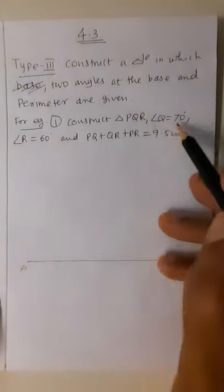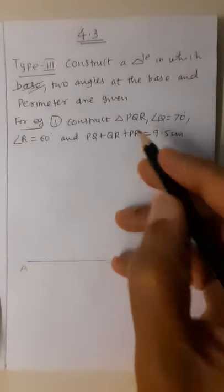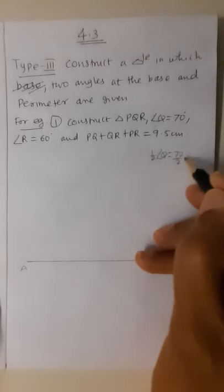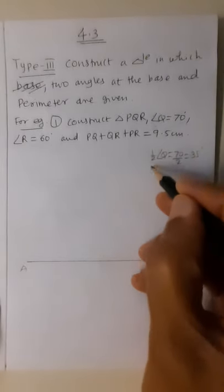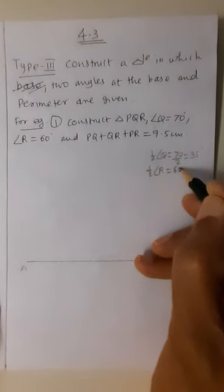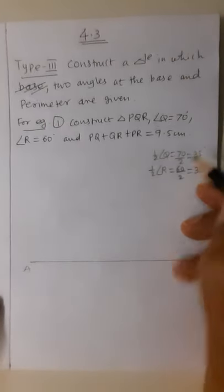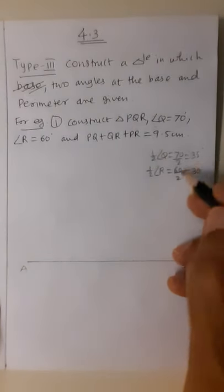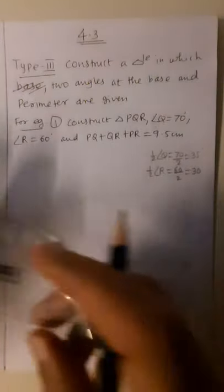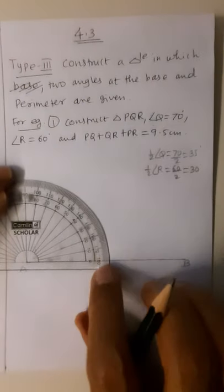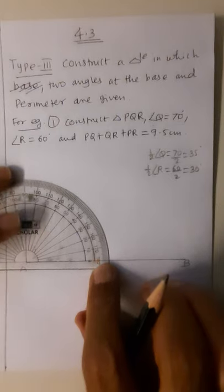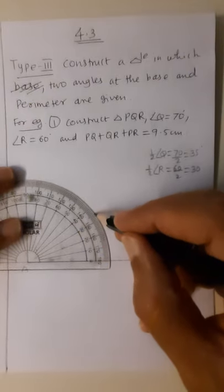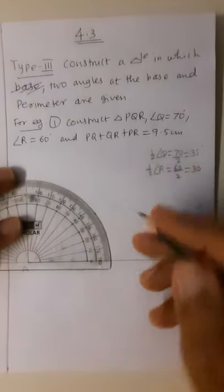The base angles are Q = 70 degrees and R = 60 degrees. We take half of each: half of 70 is 35 degrees, and half of 60 is 30 degrees. At point A we draw a 35-degree angle and at point B we draw a 30-degree angle. I keep the protractor at A and mark the 35-degree angle — this is the 35-degree ray.